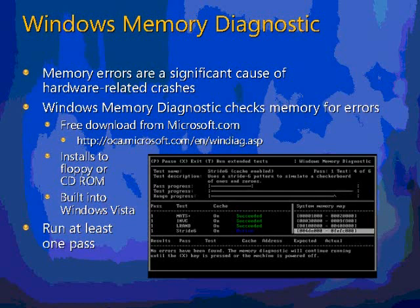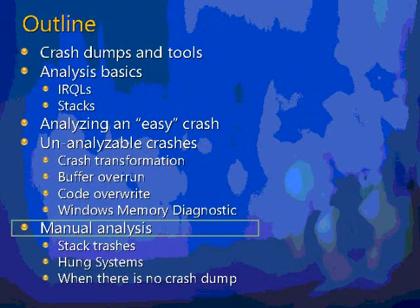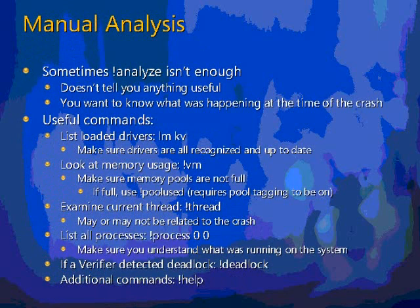It installs to a CD-ROM or boot floppy that you boot the system from. When it launches, it runs tests continuously, testing banks of memory with different memory-checking algorithms, and flags any errors it encounters — including which bank of memory had the error — so you can figure out which DIMM caused the problem and replace it. Run it through at least one pass, which might take several minutes. If you've done that and you're still getting unanalyzable crashes, sometimes you need to just poke around and look for clues using different kernel debugger commands.